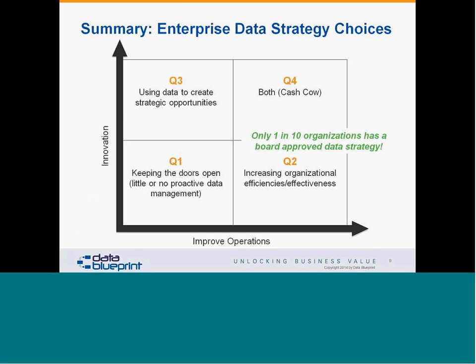So why do we need a data strategy? The key is that you have to understand data strategy in the context of strategy in general. Going back to Michael Porter, the chart I'm showing here has a y-axis representing the innovation dimension and an x-axis representing improving operations — generally effectiveness and efficiency. We have a four-quadrant diagram where quadrant one is where the vast majority of companies are: just trying to keep the door open with little or no focus on data as an asset. Moving into quadrant two means increasing efficiency and effectiveness, and quadrant three means using data to create strategic opportunities.